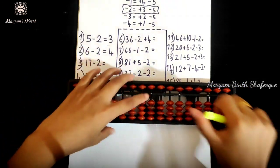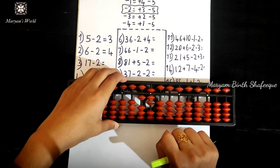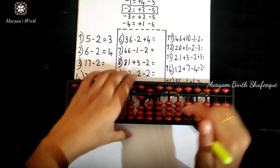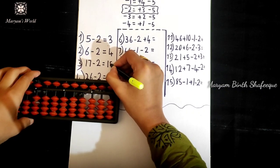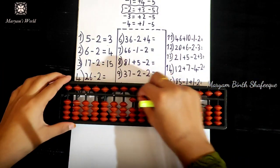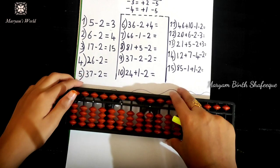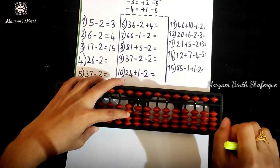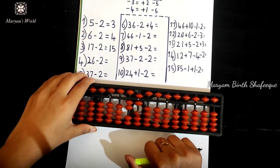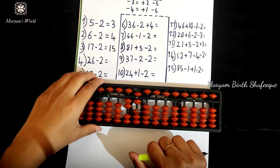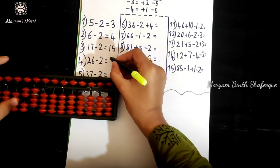Next is 17 minus 2. We will apply the formula. That gives us 15. Then 15 minus 2. Next is 26 minus 2 minus 2. Using the formula: minus 2 equals plus 3 minus 5. That gives us 24 minus 2.